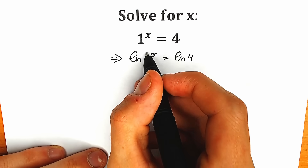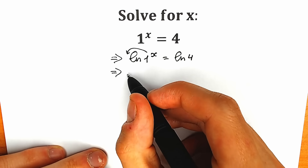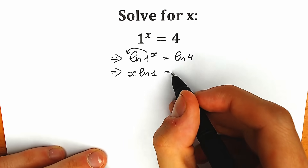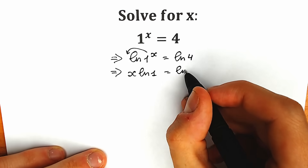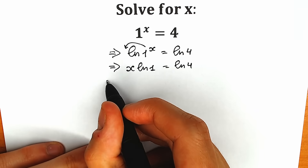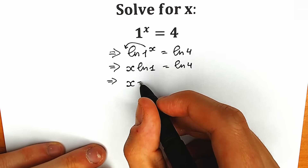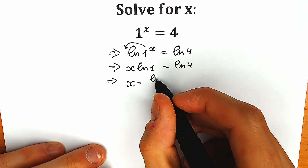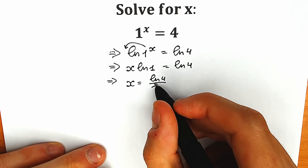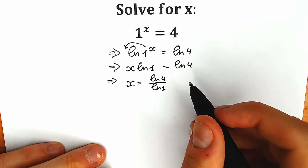According to log property, this x will come down. So we can write it as x times natural log 1 equal to natural log 4. Now let's divide both sides by natural log 1, and as a result we have only our x. So x equals natural log 4 over natural log 1. We're going to divide by this natural log 1.